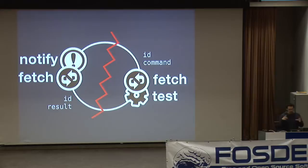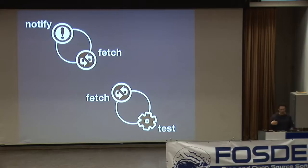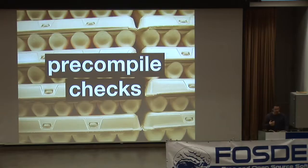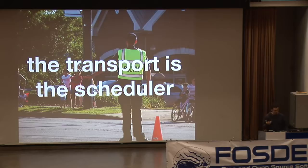We can collapse these into single phases — you can't perform a test without having a fetch, and you can't perform a notify without fetching some data. So this cycle can be broken out into two distinct cycles: the testing cycle and the notifying cycle, with a transport mechanism in between. This lets us do things like pre-compiling the checks, making lookup computationally inexpensive, and using the transport as a scheduler so the test phase just knows it needs to execute something now.